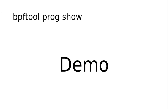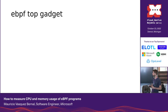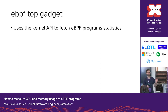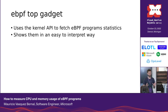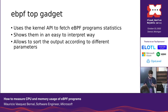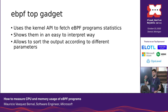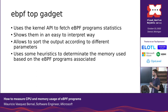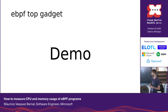So we created the eBPF top gadget in Inspector Gadget. The idea is that we use the same API provided by the kernel to get the statistics of those eBPF programs, but we show those statistics in an easier-to-interpret way. We provide a mechanism to sort by programs that are the most used, programs that consume the most memory, and so on. In addition to CPU utilization, we also have statistics to show what memory is used by those eBPF programs.